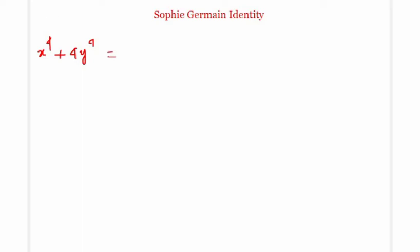This expression we need to factorize, and the Sophie Germain identity is about factorizing it. We can write x⁴ as (x²)² and 4y⁴ as (2y²)².